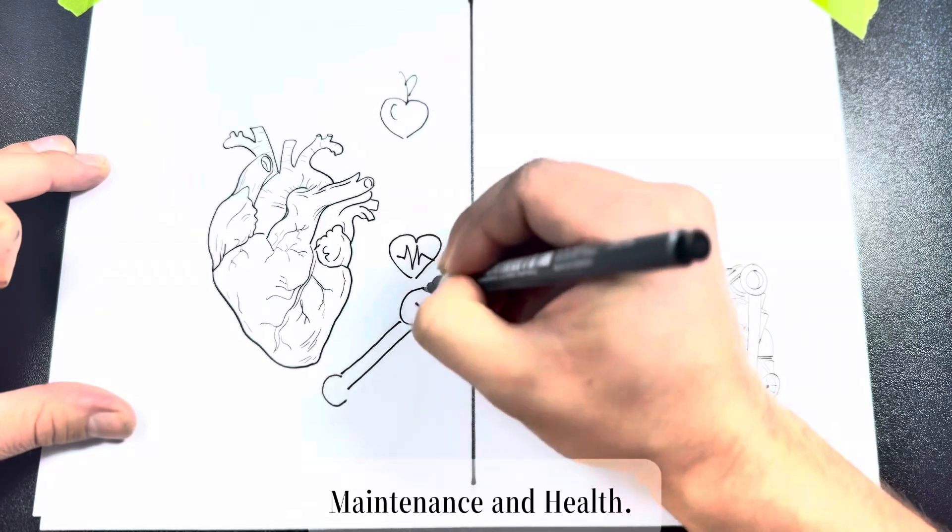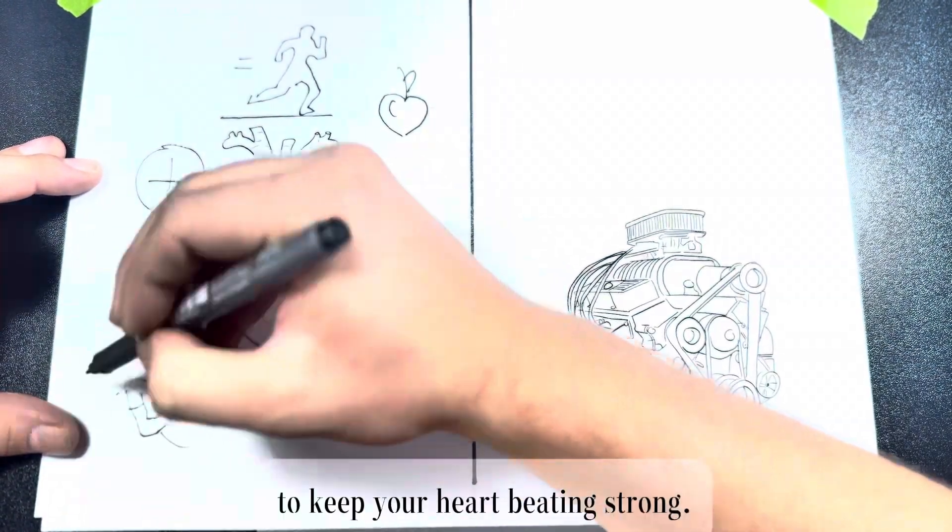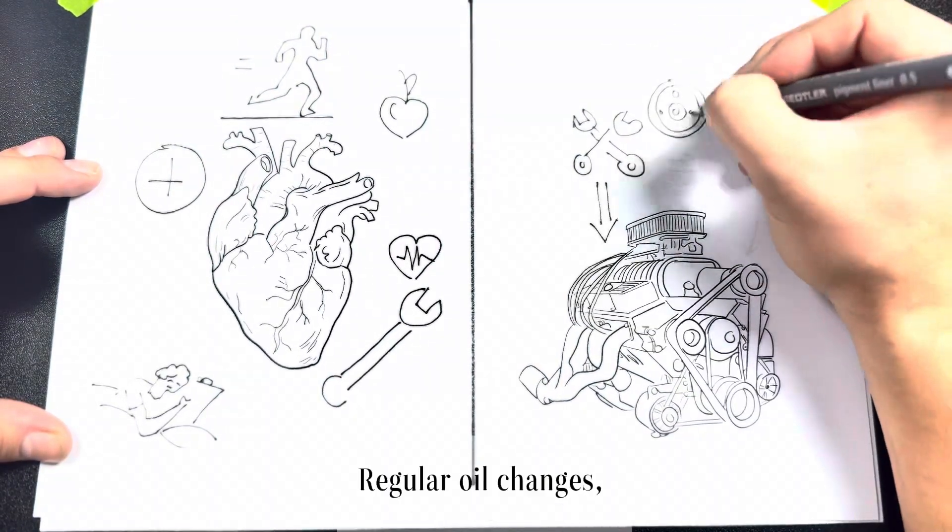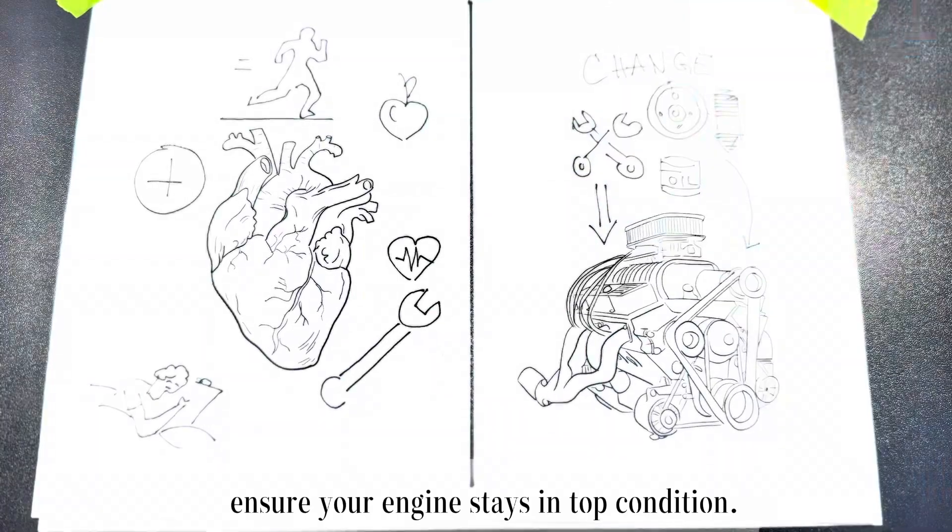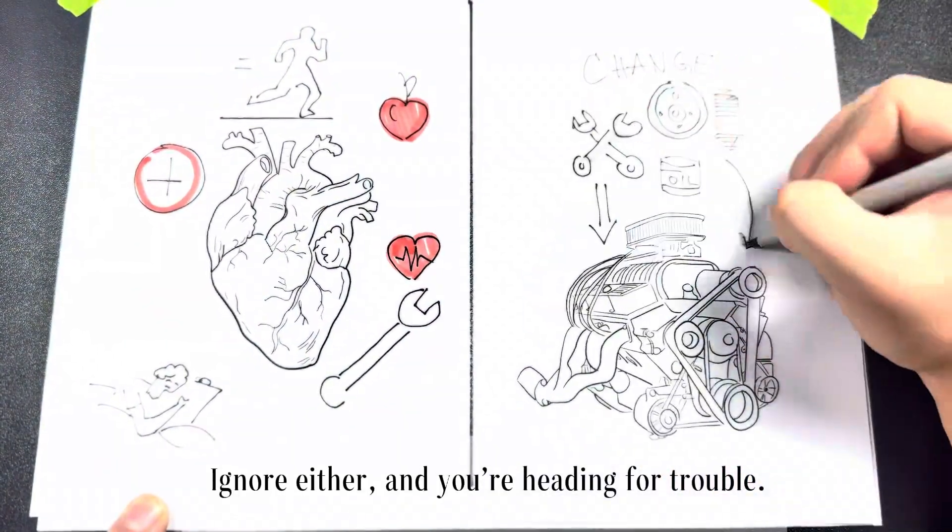Maintenance and health: For the heart, healthy eating, exercise, and care are essential to keep it beating strong. For the engine, regular oil changes, tune-ups, and maintenance ensure it stays in top condition. Ignore either, and you're heading for trouble.